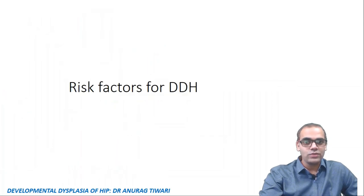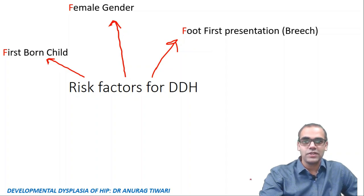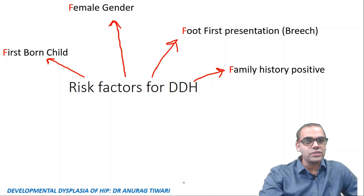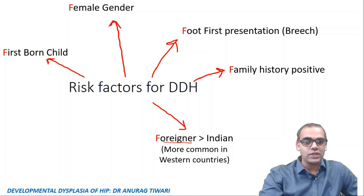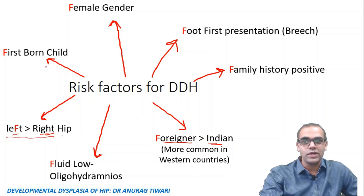Risk factors for DDH can be remembered by the letter F: first born child, female gender (due to sensitivity to maternal hormone relaxin crossing the placenta causing generalized laxity), foot-first or breech presentation, family history positive, foreigner (more common in western countries), fluid low (oligohydramnios), and finally, left hip joint is more commonly involved than right.